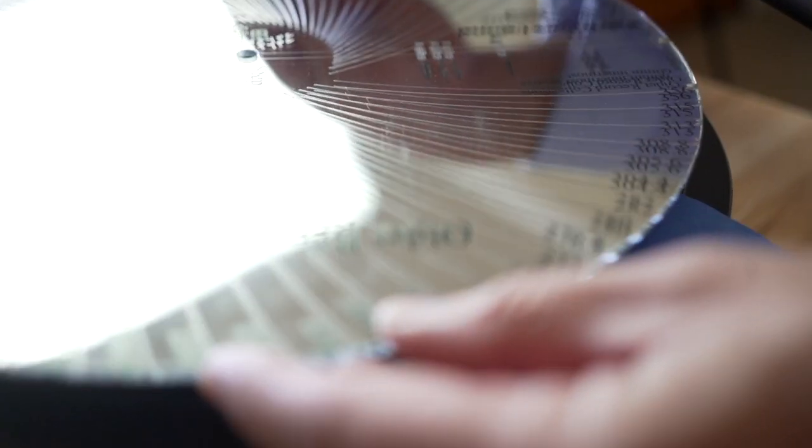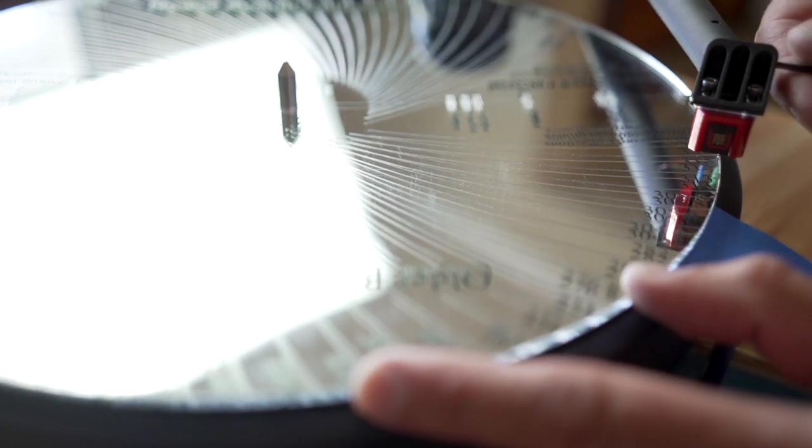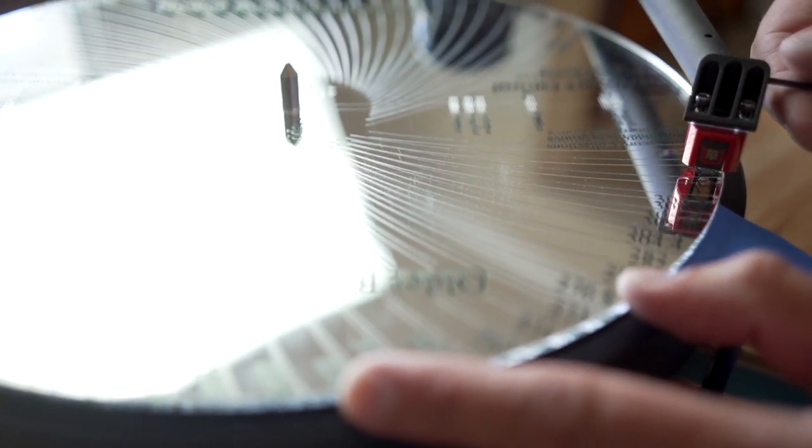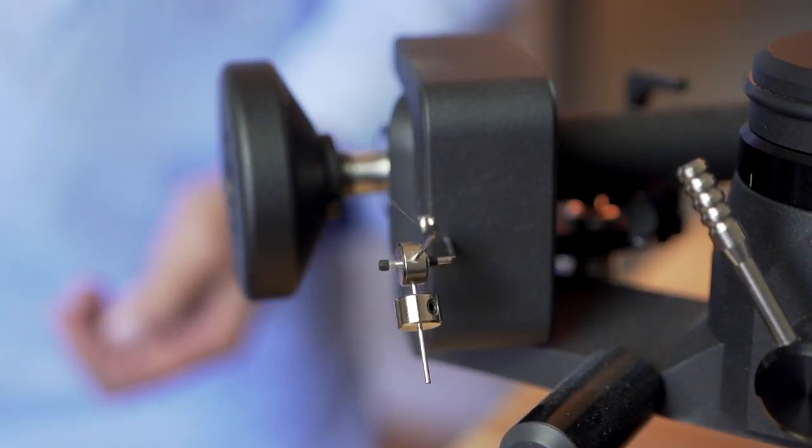Next step is of course setting overhang and offset angle with the WALL-E tractor. Next, recheck your vertical tracking force. And now bring back the WALL-E skater to set your anti-skating.